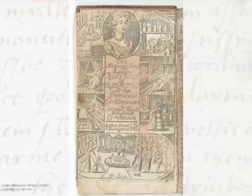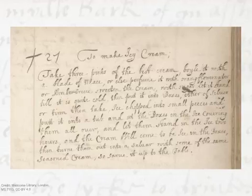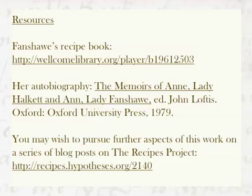Now the real work begins of interpreting the document. Here, of course, there are many paths depending upon the questions you've brought to it. Perhaps you're interested in women healers, or in the trade in drugs, or in the relationships between Galenic and Paracelsian medicines, or in the history of cooking — this book is often claimed as the source of the very first English recipe for ice cream — or any number of other topics. Once you've laid some foundations for what kind of document this is and answered some of those who, what, when, where, how, and why questions, you will be in much better shape to interpret it. I hope I've got you off to a good start, and here are a few resources if you've been captivated by Fanshawe's recipe book. Thank you.